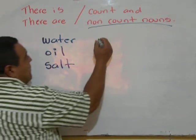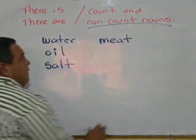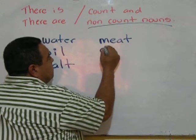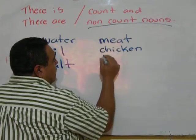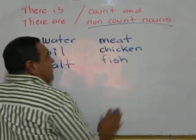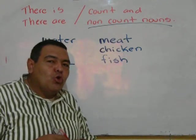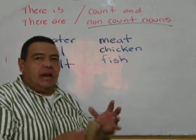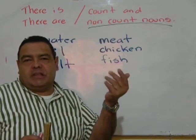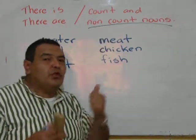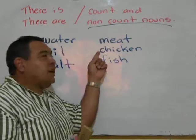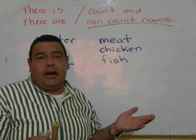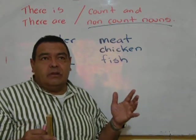What else? For example, meat — meat cannot be counted. And with meat comes chicken and fish. I'm talking about the food, not the animal. If I talk about the animal — pollo — yes: one chicken, two chickens, five chickens. But whenever you're talking about the food chicken, the word chicken as food, it's not count.